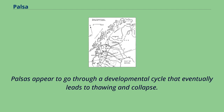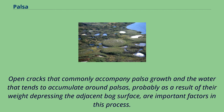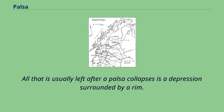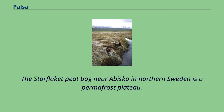Palsas appear to go through a developmental cycle that eventually leads to thawing and collapse. Open cracks that commonly accompany palsa growth and the water that tends to accumulate around palsas, probably as a result of their weight depressing the adjacent bog surface, are important factors in this process. The fact that palsas in various stages of growth and decay occur together shows that their collapse is not necessarily indicative of climatic change. All that is usually left after a palsa collapses is a depression surrounded by a rim.